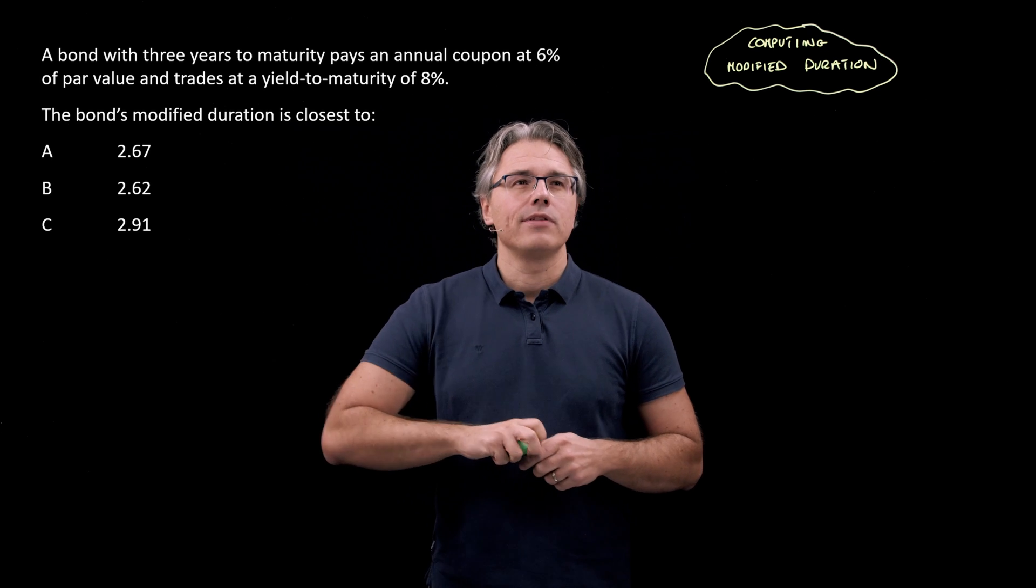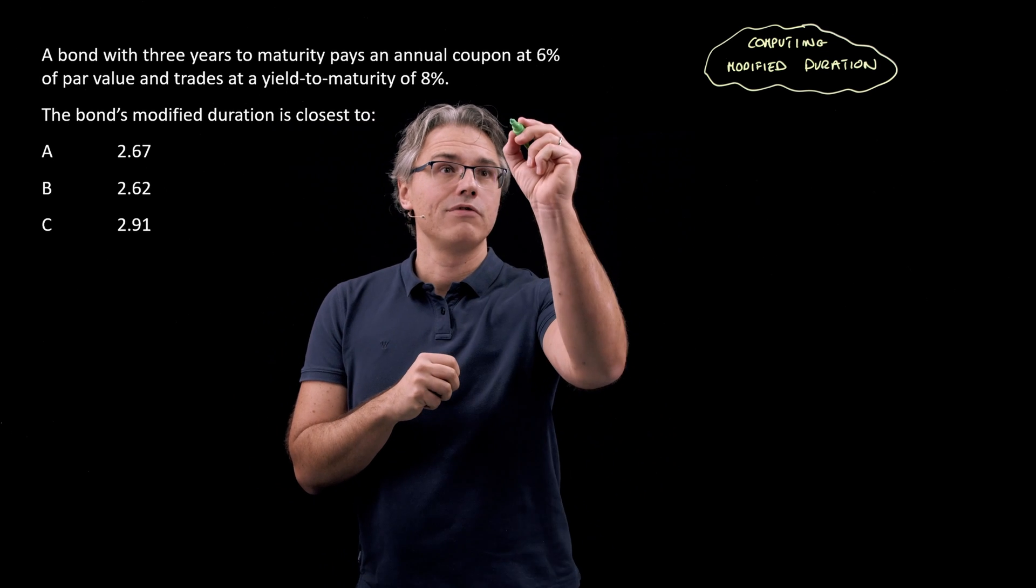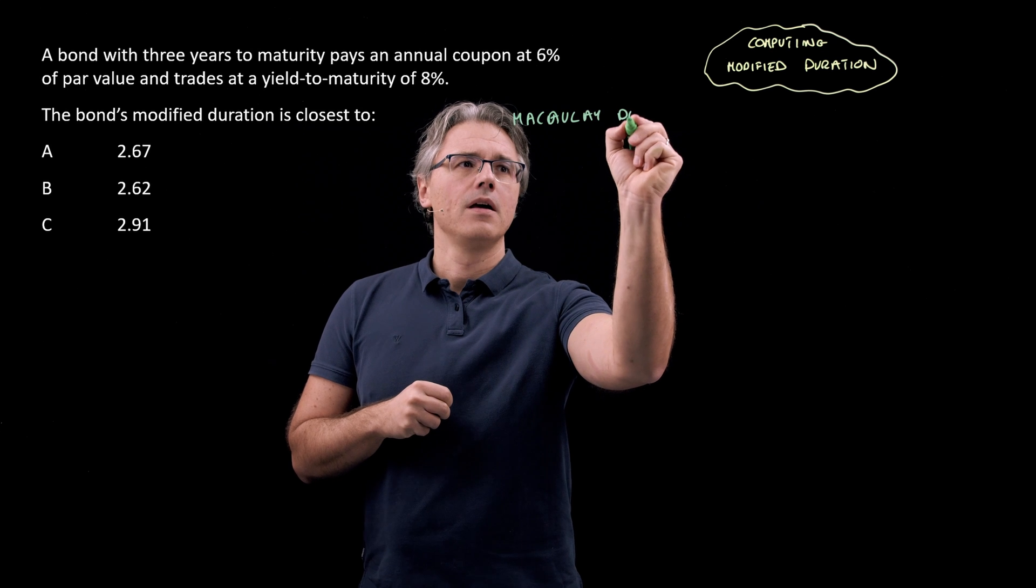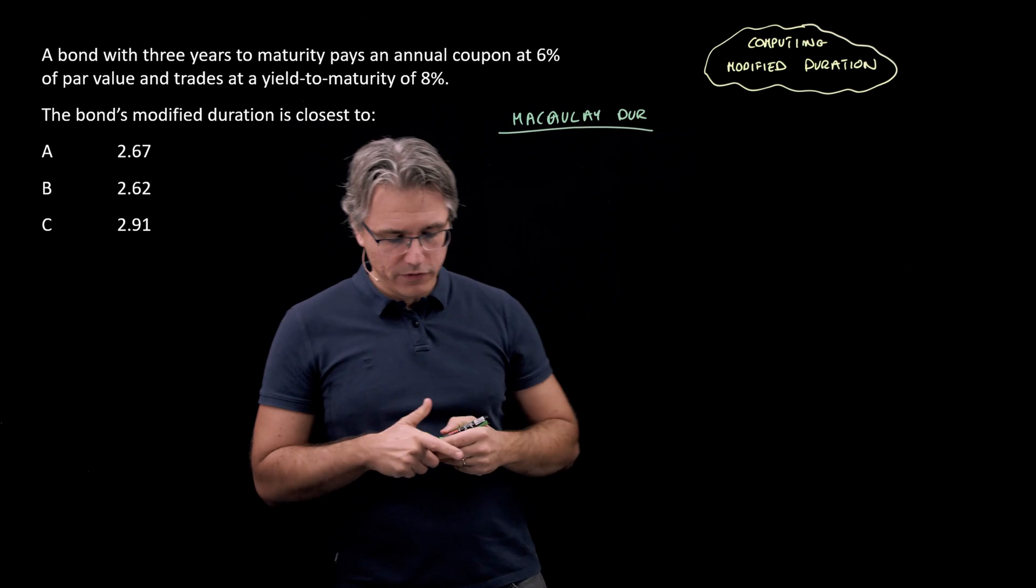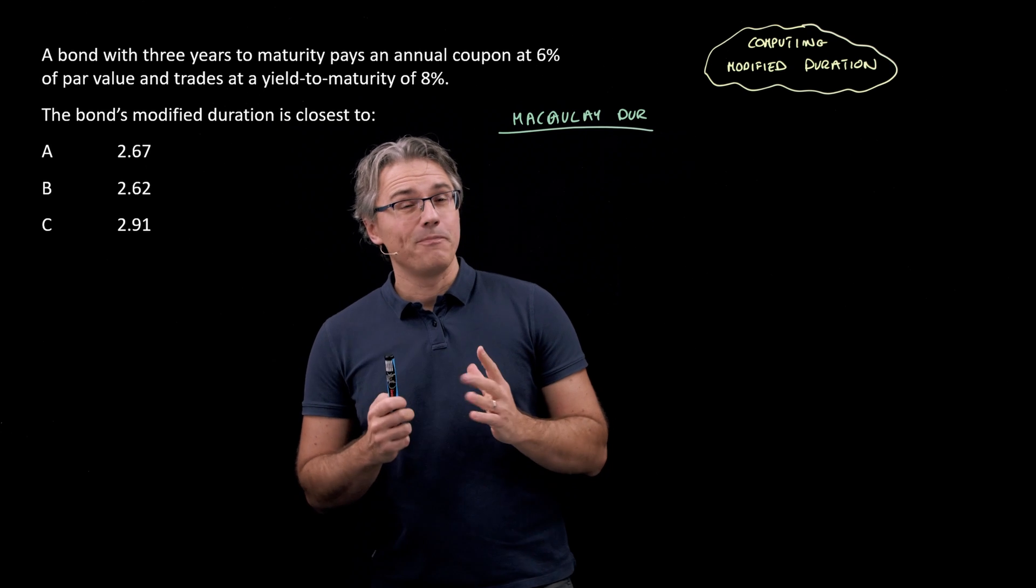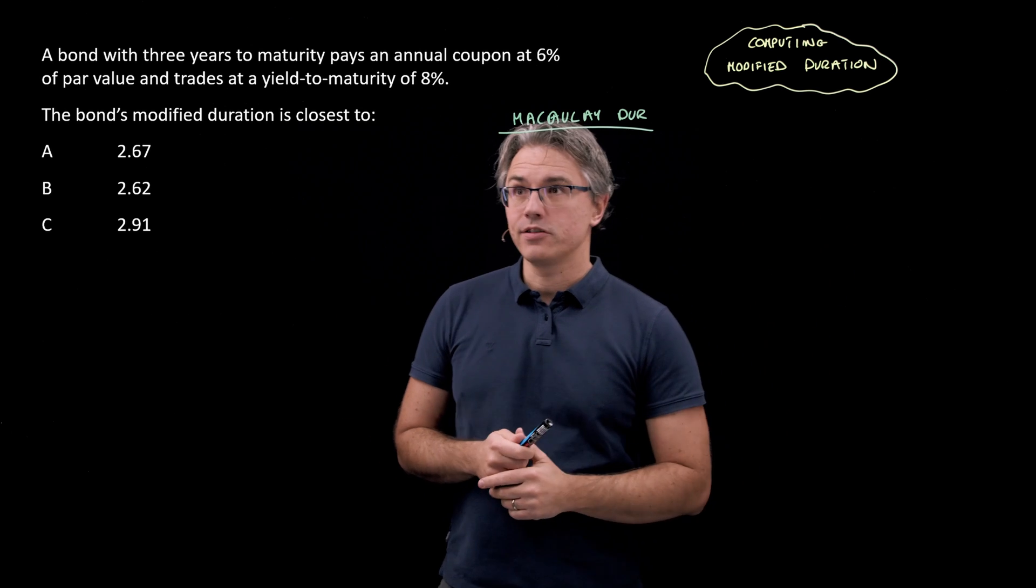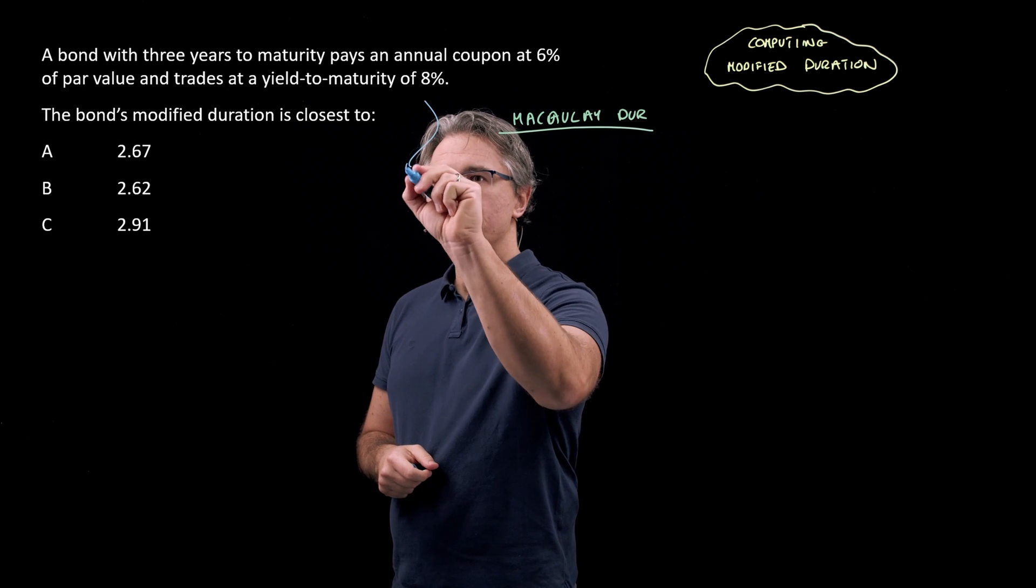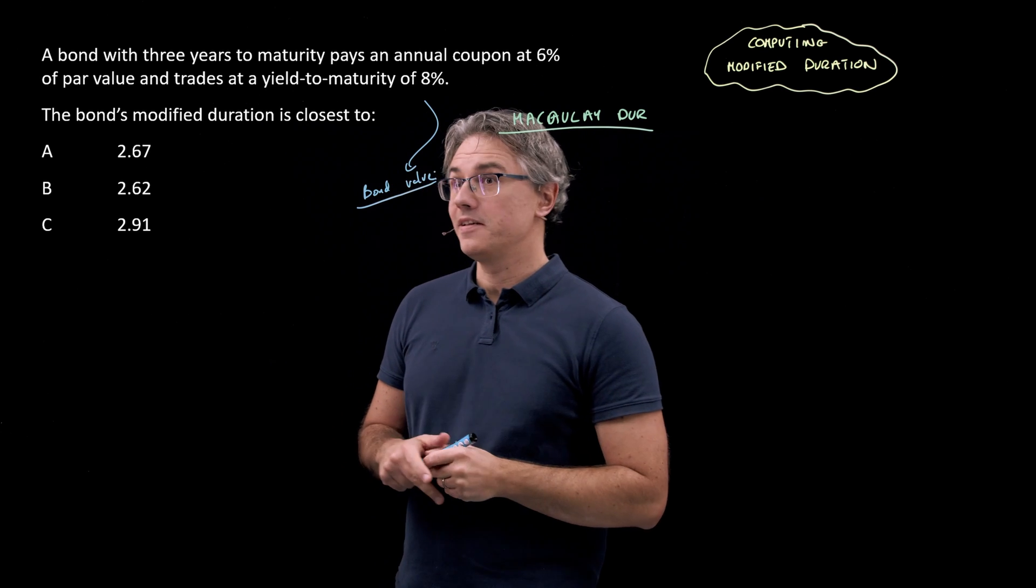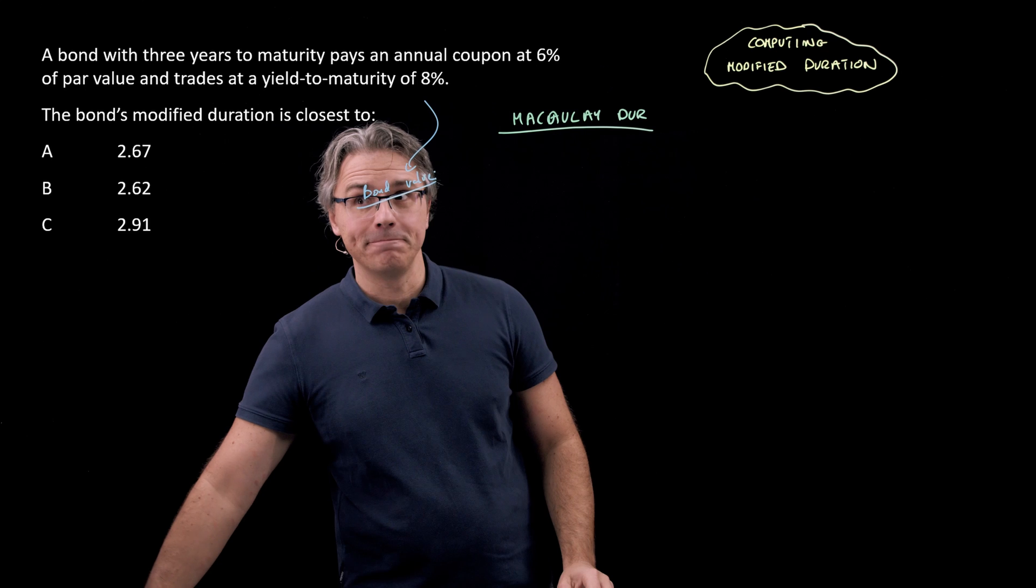So what we're going to have to do is compute modified duration starting with something called Macaulay duration. And from this we'll derive modified duration, but don't worry the adjustments are going to be relatively easy. Now one thing I need to do before we compute Macaulay duration is actually compute the value of the bond. Bond price or bond value is not provided, but we've got the parameters necessary, so let's switch to the calculator view and get this computed.